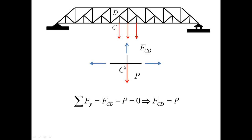For this bar it is sufficient to consider the free body diagram for the joint C and the force equilibrium equation along the y-axis immediately gives us that the bar CD is in tension and the magnitude of the tension is P.